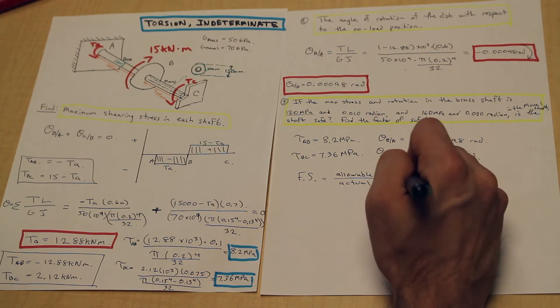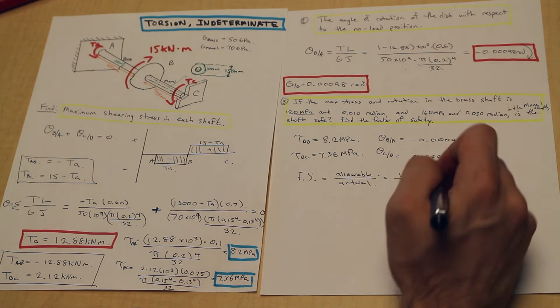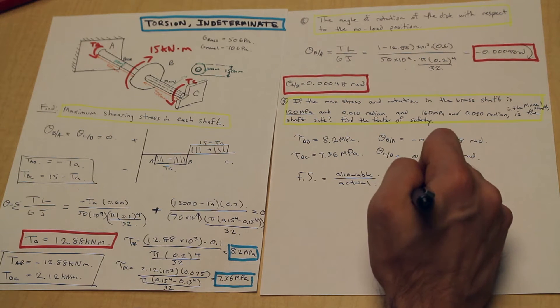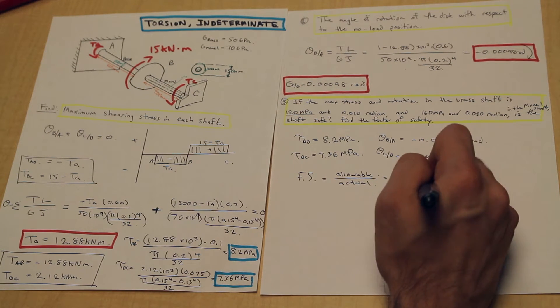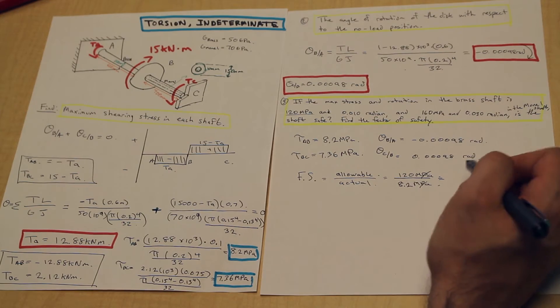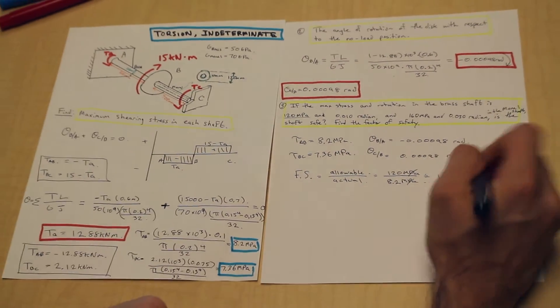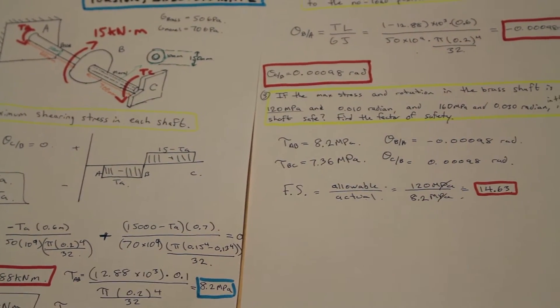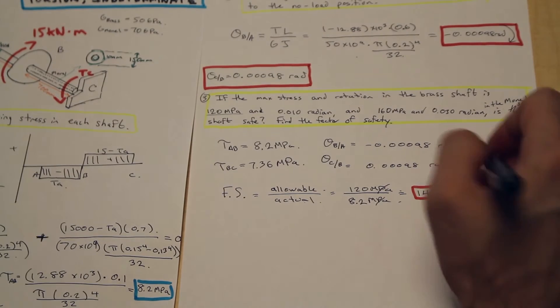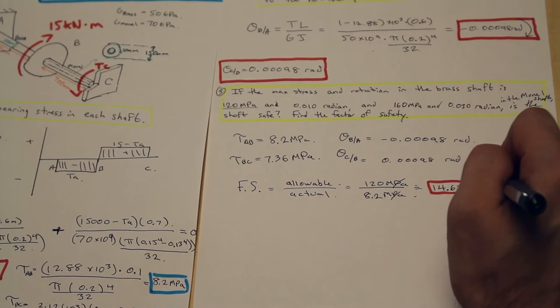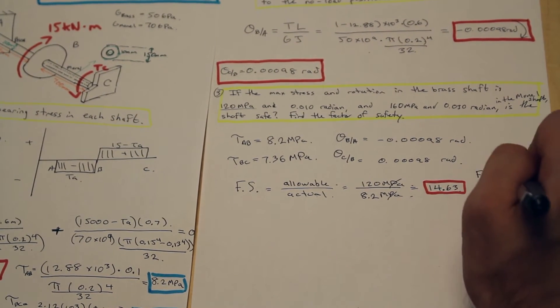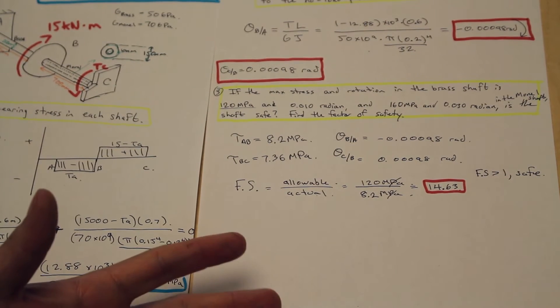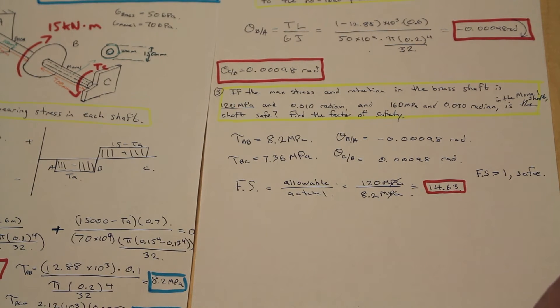So 120, and this is a unitless value, the factor of safety, because it's the same units divided by each other. What does that give us? That gives us 14.63 as our factor of safety. Now, as a general rule for the factor of safety, if the factor of safety is greater than one, it is safe. But 1.5 or 1.2 or 1.1, it's safe, but there's not a lot of margin of error for that safety.